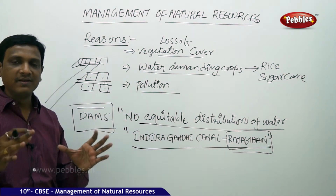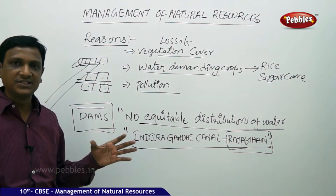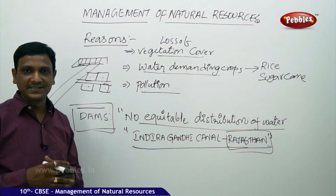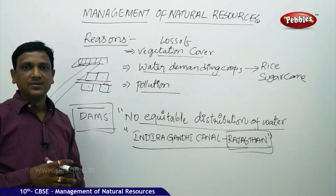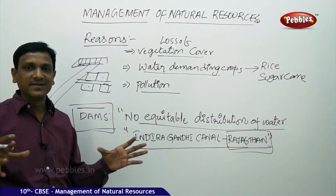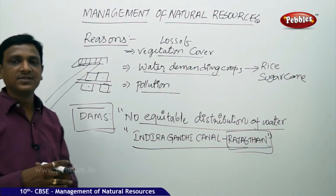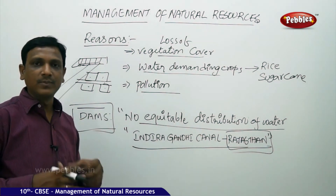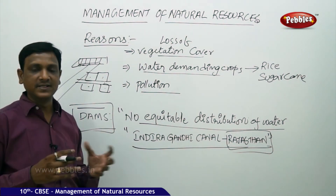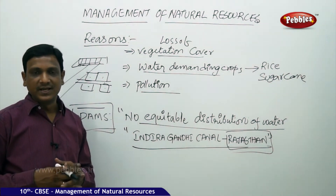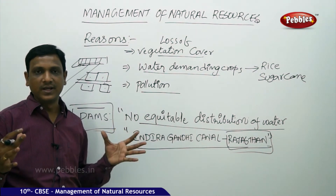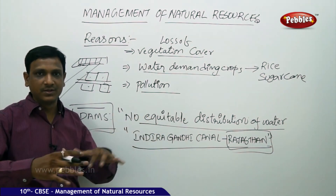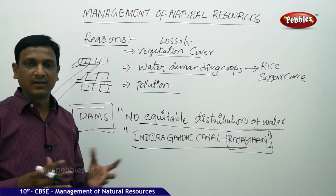One more issue linked with the construction of dams is the evacuation of the area. Many people living in the area are evacuated because constructing the dam requires a very large area, and certain villages have to be displaced. We can see this issue currently with the Polavaram dam in Andhra Pradesh. People are promised housing and other facilities if they leave their village, but how far these promises are fulfilled is another social issue. Additionally, while constructing such projects, forest areas also get submerged by water, leading to loss of biodiversity — many animals become extinct or disappear from the area.